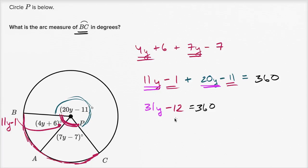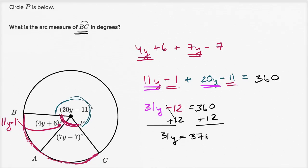Adding 12 to both sides gives us 31y equals 372. Dividing both sides by 31, y equals 12.